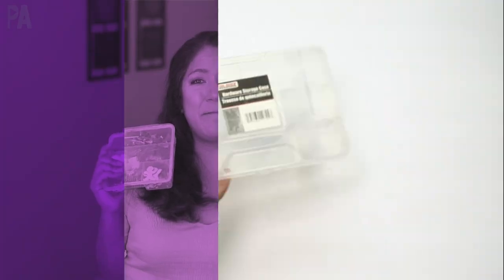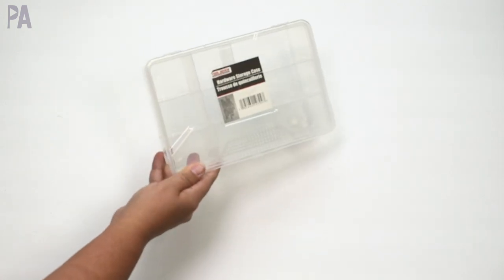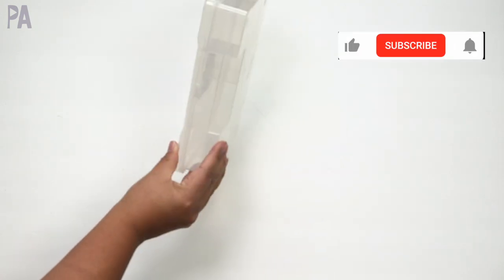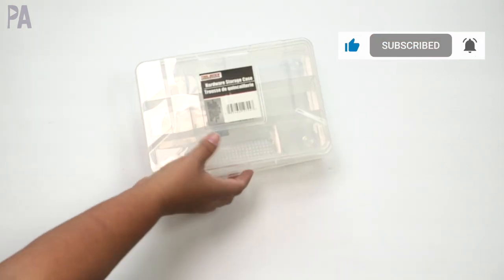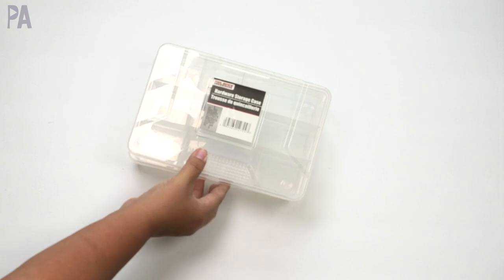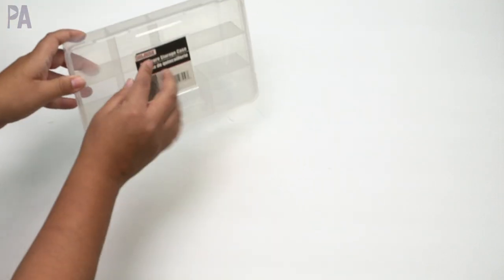Biggest question I always get is what box do I use? I like the ones from Dollar Tree because they're $1.25 and I like that they're flat and stackable, so if you have several of them you can just stack them. This particular one comes from the hardware section from the tool punch line.